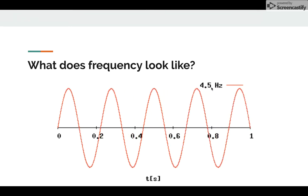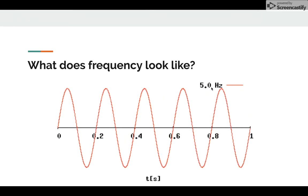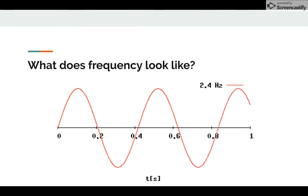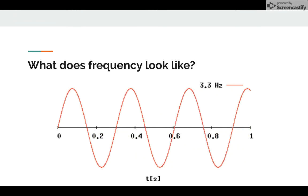And if the wavelength gets bigger, the frequency would get smaller. This is called an inverse relationship. The two variables are opposite of one another.